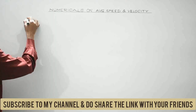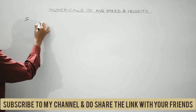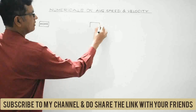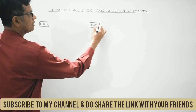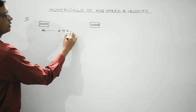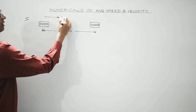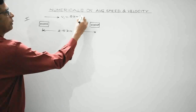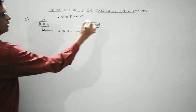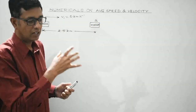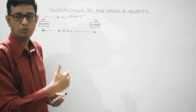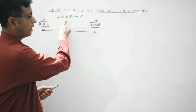Suppose a person starts from his home and reaches a market which is at a distance of 2.5 km from his home, with a speed of 5 km per hour.